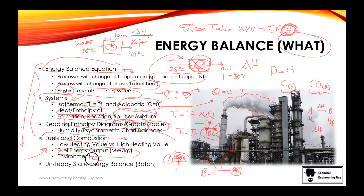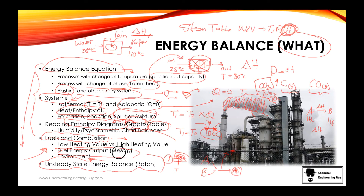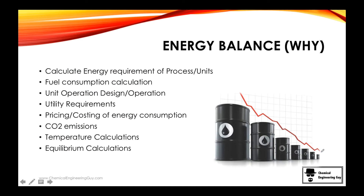For fuels and combustion we'll cover lower heating values, higher heating values, dry or humid fuel basis, energy output, and the environmental aspect. For instance, combustion produces CO₂ and NOₓ, but plenty of CO₂ — which increases Earth's temperature and contributes to global warming. Finally, we'll cover unsteady-state processes. All of the above was for steady-state continuous flow. Unsteady state means batch processes — like heating water in a tank, converting it to vapor, and using that vapor later to heat something else.